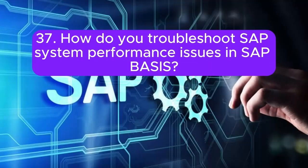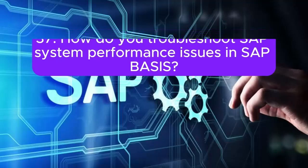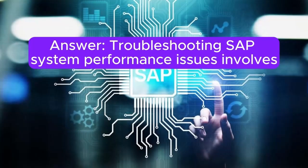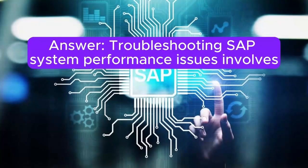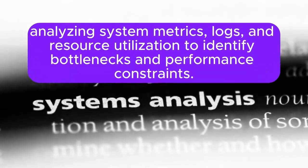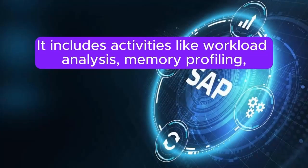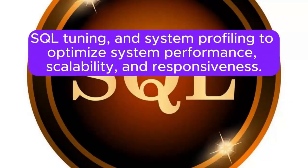Question 37: How do you troubleshoot SAP system performance issues in SAP BASIS? Troubleshooting SAP system performance issues involves analyzing system metrics, logs, and resource utilization to identify bottlenecks and performance constraints. It includes activities like workload analysis, memory profiling, SQL tuning, and system profiling to optimize system performance, scalability, and responsiveness.